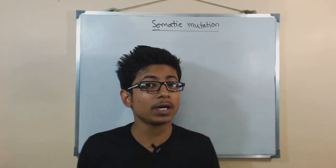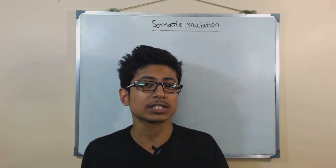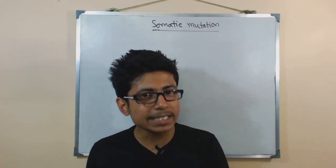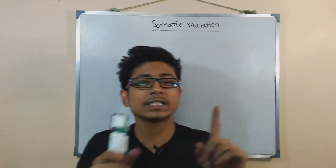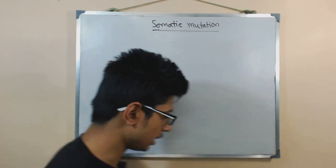If mutation occurs in sperm and egg cells, the chances for the mutation to be transferred to the next generation is always there. But if the mutation occurs in our normal somatic cell, that mutation is called somatic mutation because the mutation in somatic cell is not inheritable. It's not inheritable.